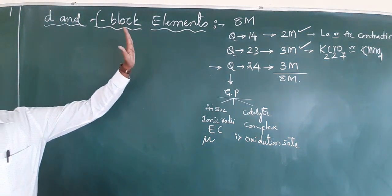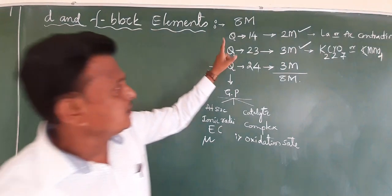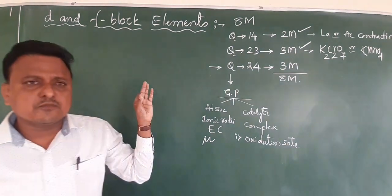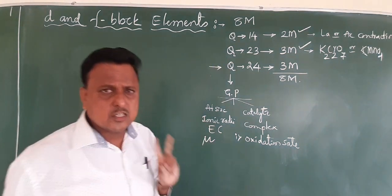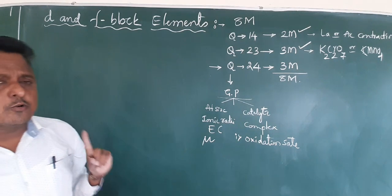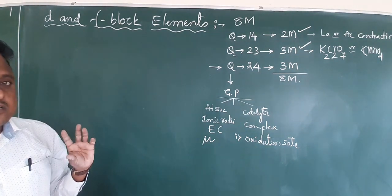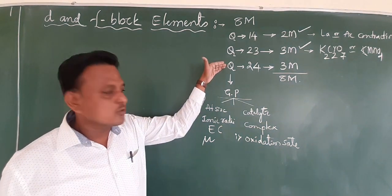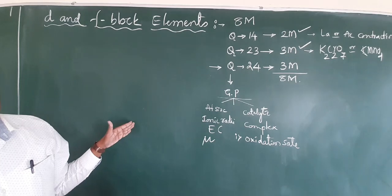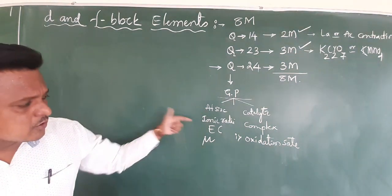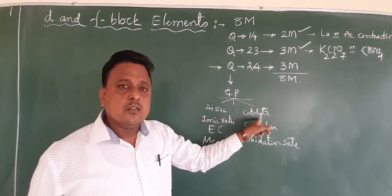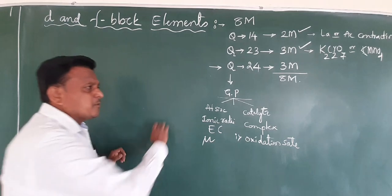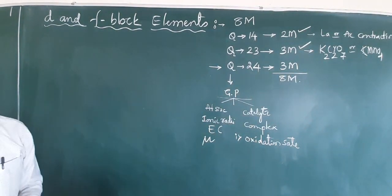To summarize D and F block elements: the weightage is 8 marks. Question number 14 — 3 possible questions: lanthanide contraction, actinide contraction, or difference between lanthanides and actinoids. Question number 23 is fixed — the manufacture of potassium permanganate or potassium dichromate, 3 marks. If you know these, that is already 5 marks from this chapter. Question number 24 covers general properties of D block: atomic size, ionic radii, electronic configuration, magnetic moment, catalytic properties, complex formation, and oxidation state.